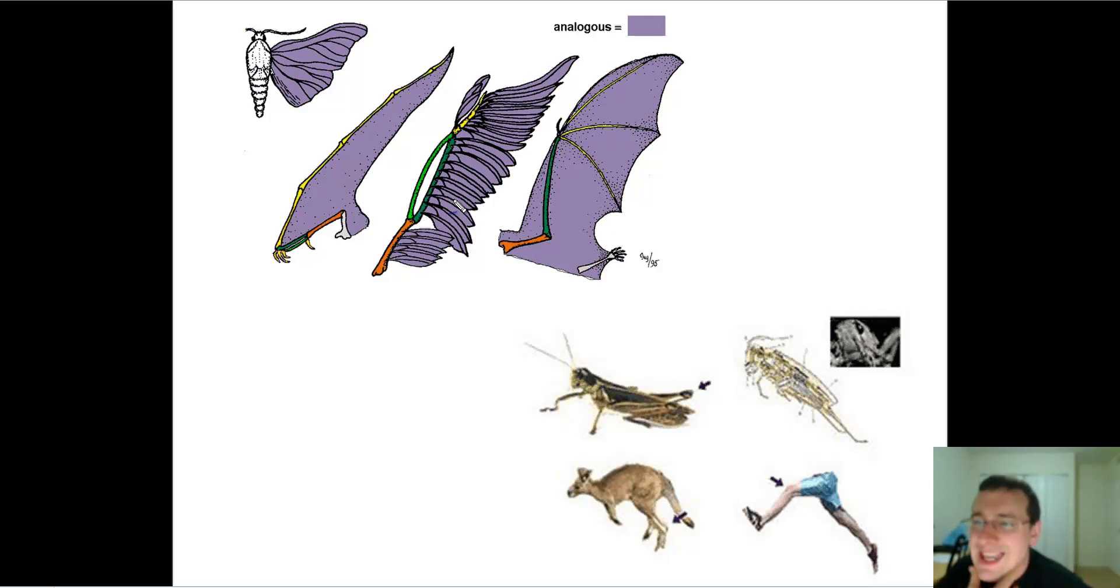This is what we call analogous structures. This is similar structures in organisms which are different from each other but do not share a common ancestor, but they have a shared evolutionary trait. But it's not because they have a common ancestor. It's because they lived under similar environmental pressures. So this is called analogous structures. And that, too, proves evolution.